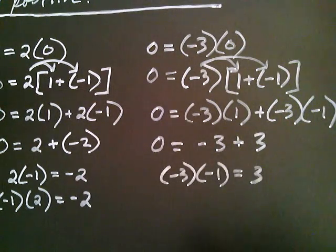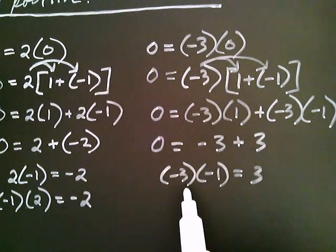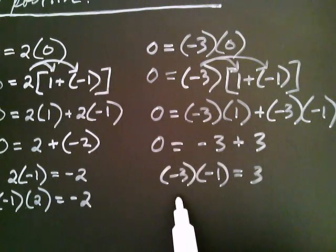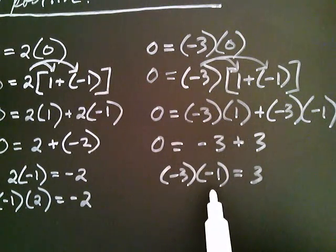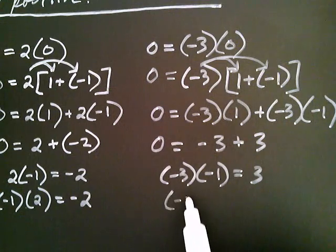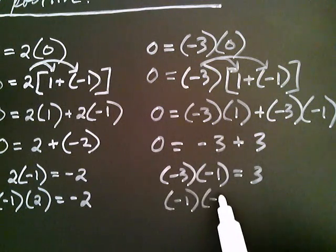Just like before, I can take advantage of the fact that multiplication is commutative — I can interchange the order of multiplication. So instead of negative three times negative one, I can write it as negative one times negative three.